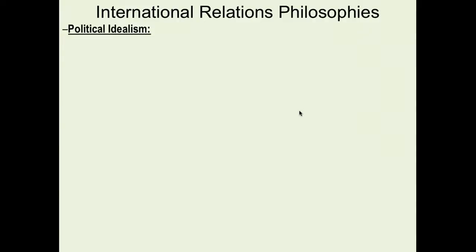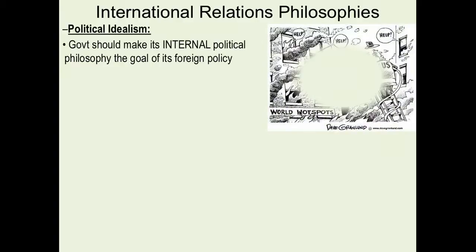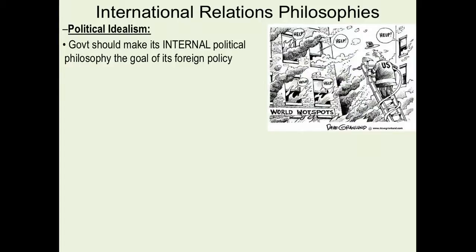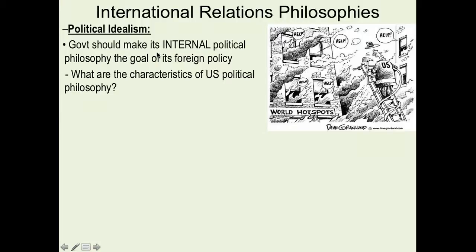Now let's go over something I find fascinating: the different types of international relations philosophies. I'm covering the two basic ones — there are many more. Let's start with idealism, or political idealism. The idea is that the US government should use its internal political philosophies as the goal of its foreign policy. Think about characteristics of US politics: democracy, voting, minority rights, equal opportunity.